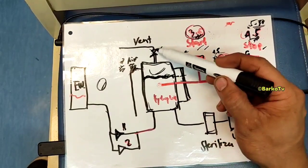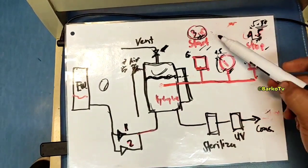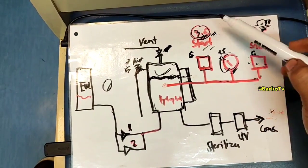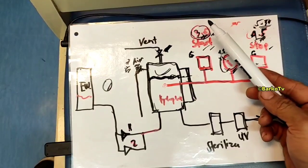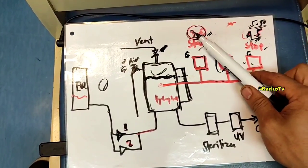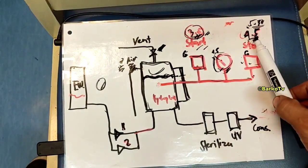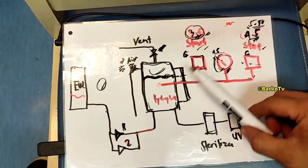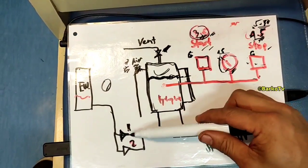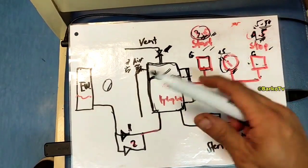First, bleed air until pressure drops to 3.5 bar — that is the start setting. Bleed air for the start point. Then, when set to auto, the pump runs again, reaches 5.3 bar, and you wait for it to stop.